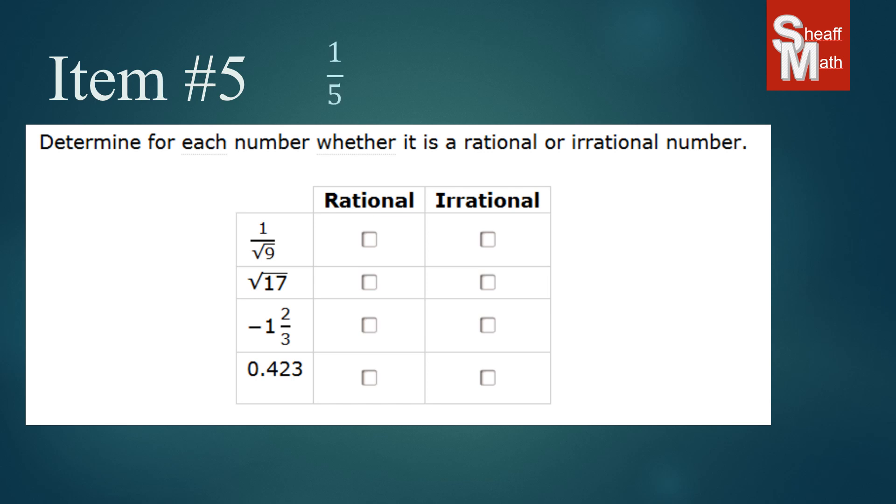Like one over five is a rational number. Negative seven over two is a rational number. You can have a negative. Four is a rational number because you can represent it as four over one. And even square root of nine is a rational number because the square root of nine is three, and you can write that as three over one.